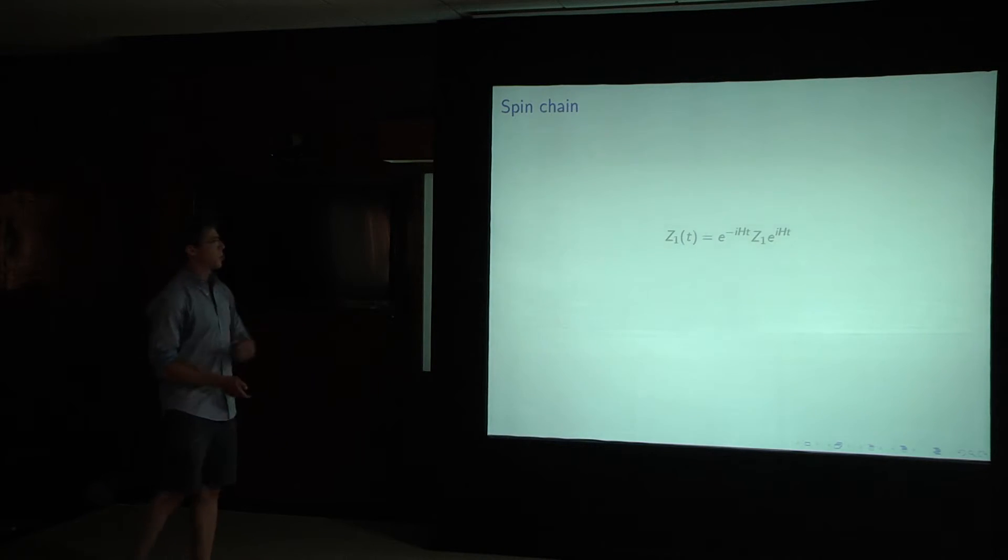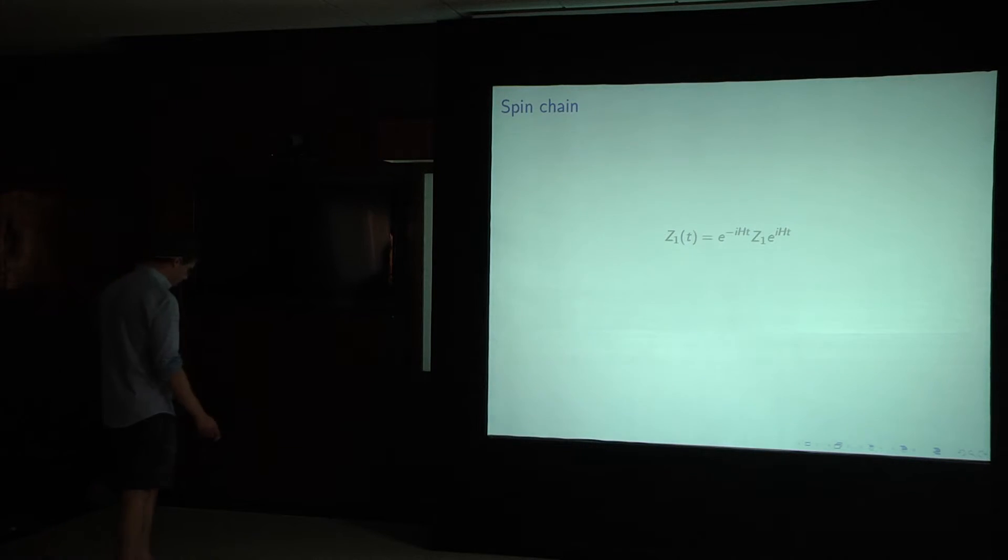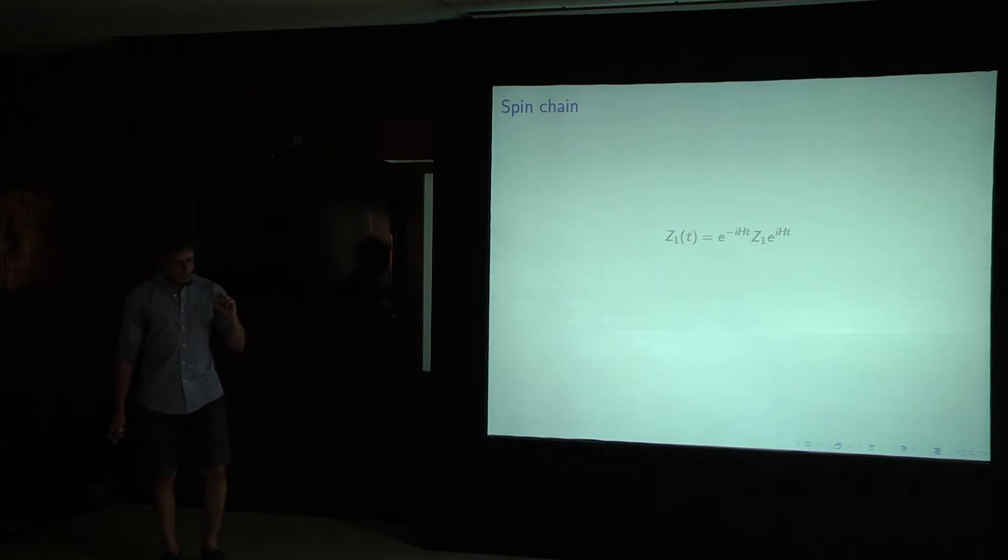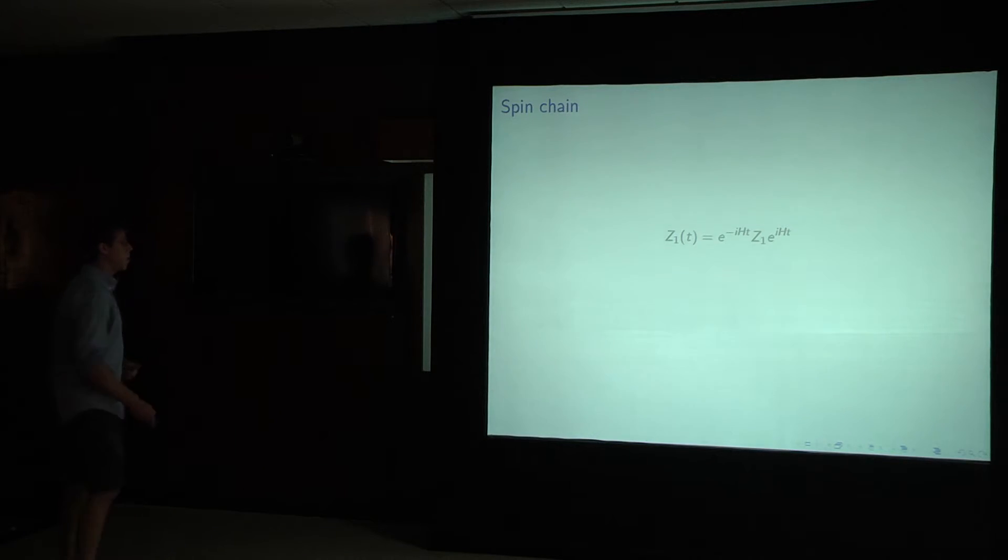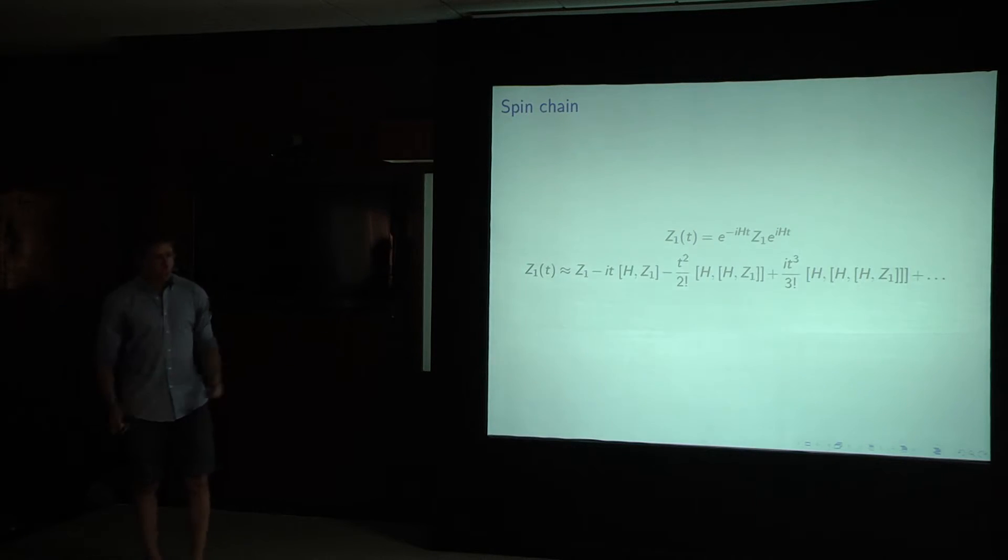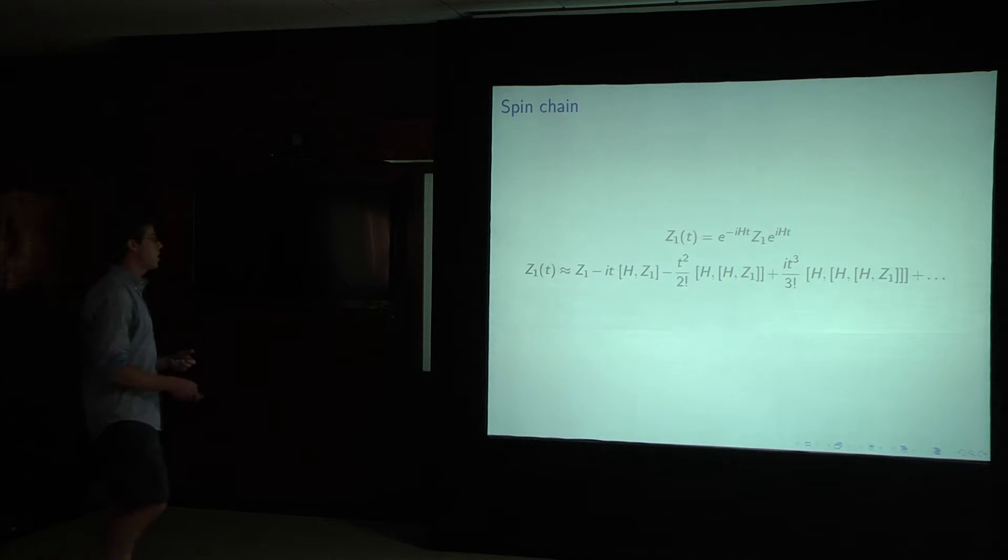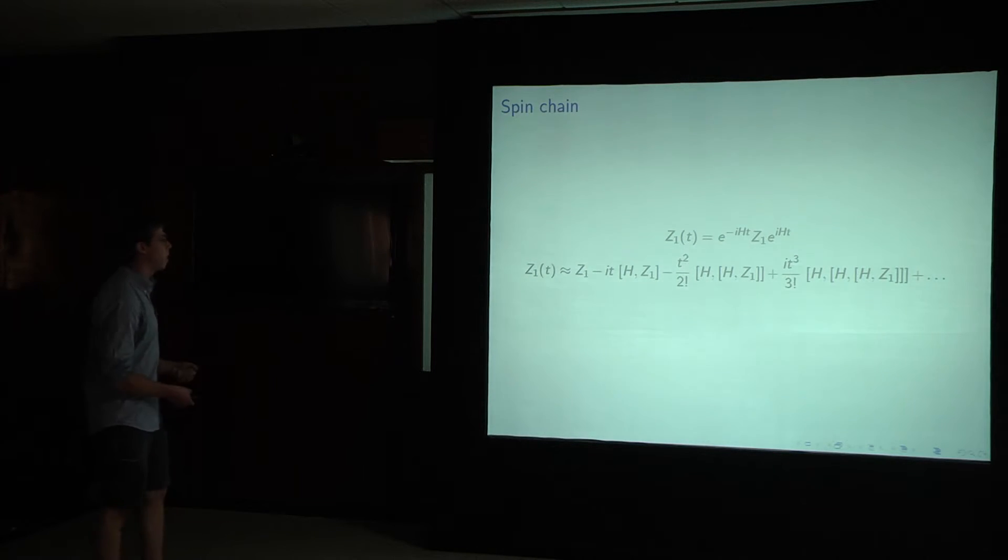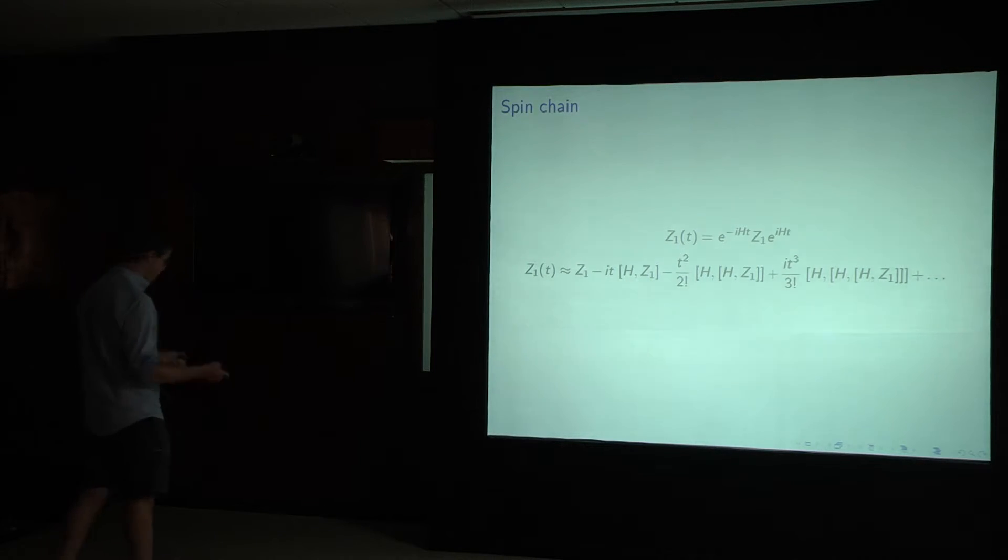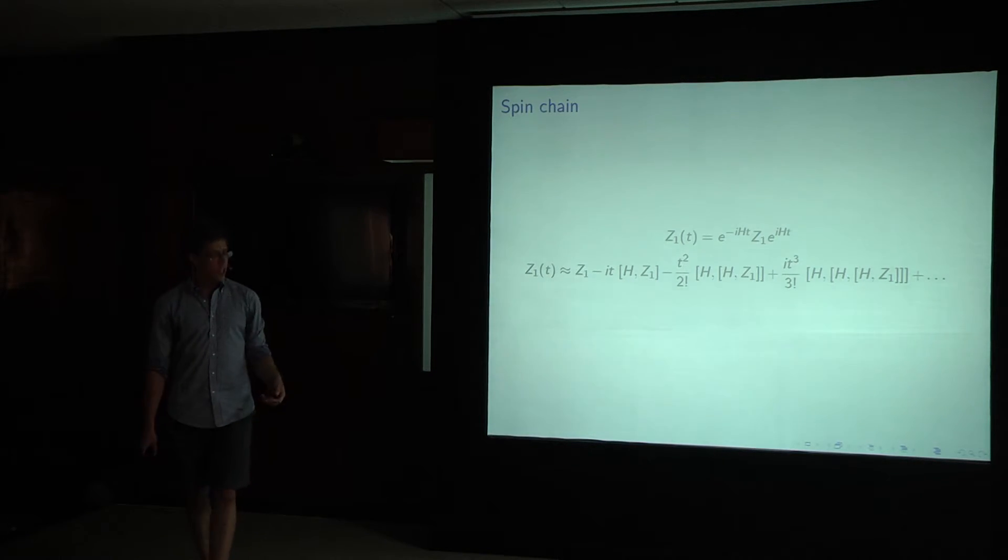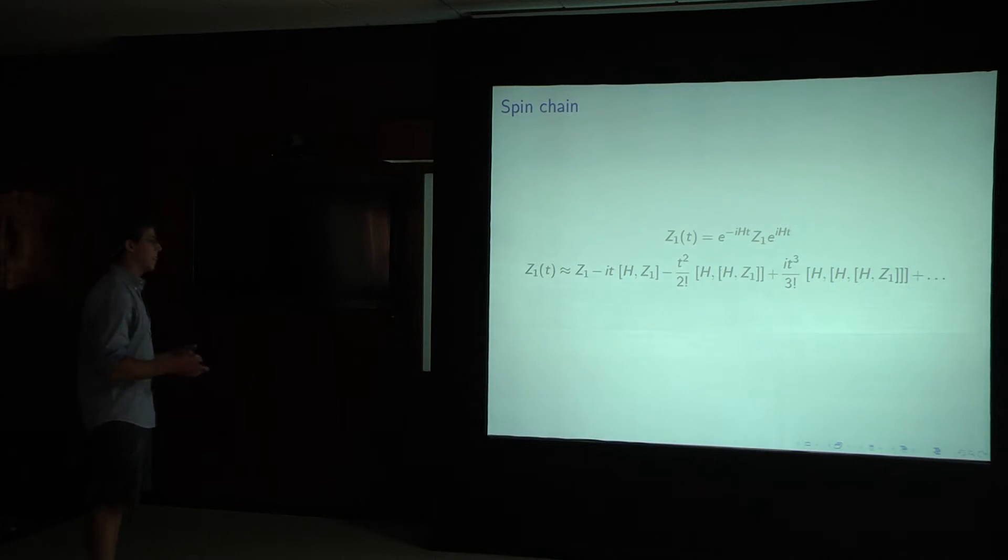So this is the sort of operator and time evolution that we're interested in studying. We'll take the spin Pauli z operator, put it on the first site, and then study its time evolution. Well, we can just expand this using the Baker-Campbell-Hausdorff formula. And what we see is that this expansion is a sum of terms that involve time-dependent coefficients, of course, and nested commutators with the Hamiltonian. The kth term in this expansion goes like t to the k over k factorial, and you get k nested commutators.